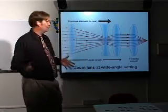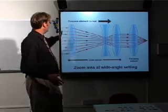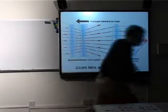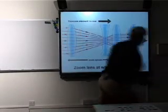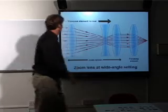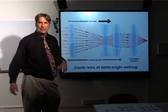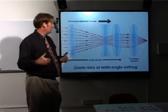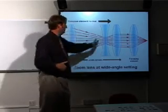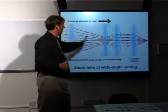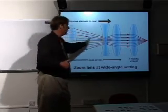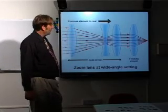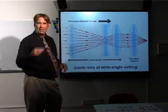Now, the thing about this is the first three elements you see are actually part of the zoom mechanism. What's going to happen in a zoom mechanism is this concave piece moves back and forth. And then the focusing element — the very last one — is...